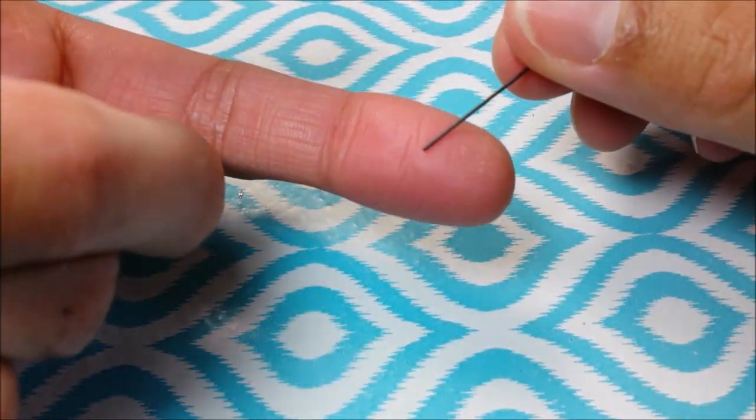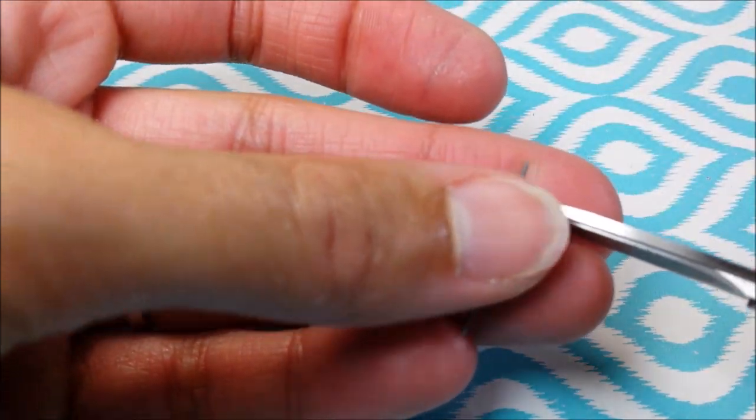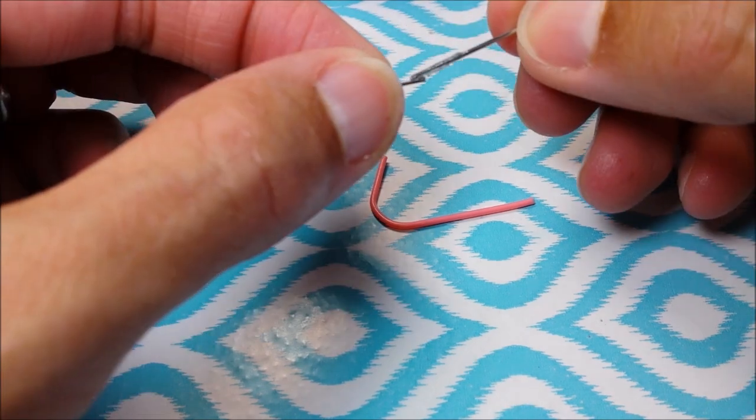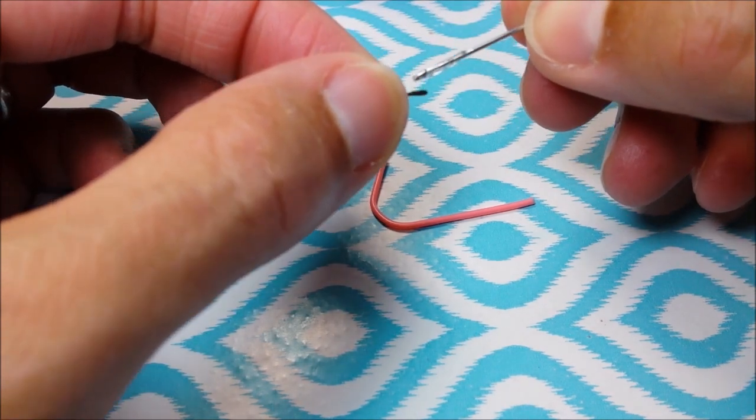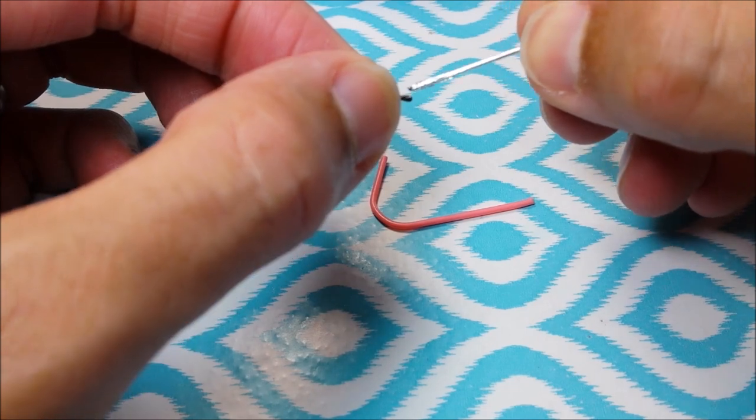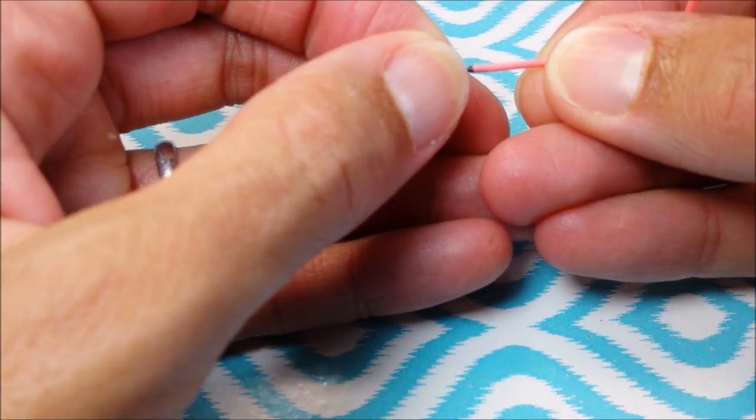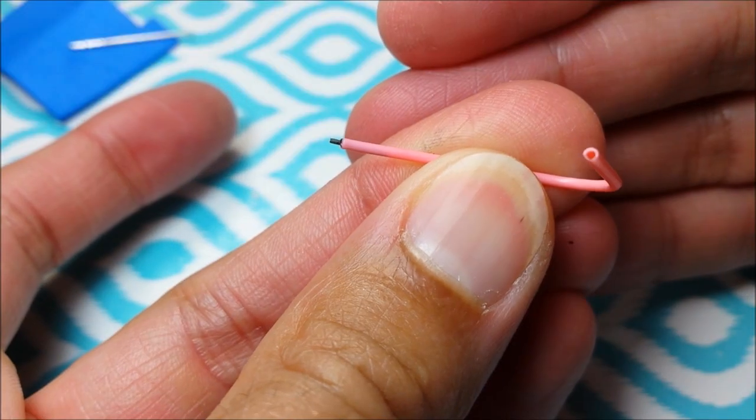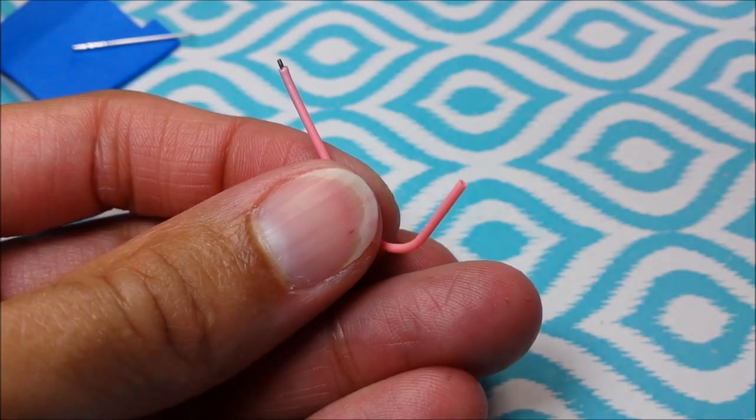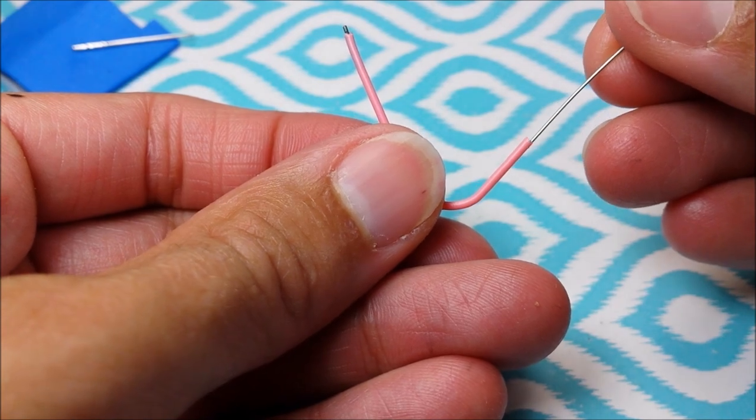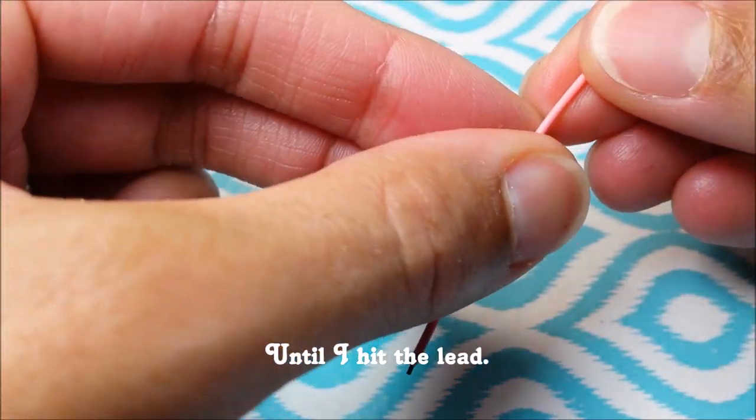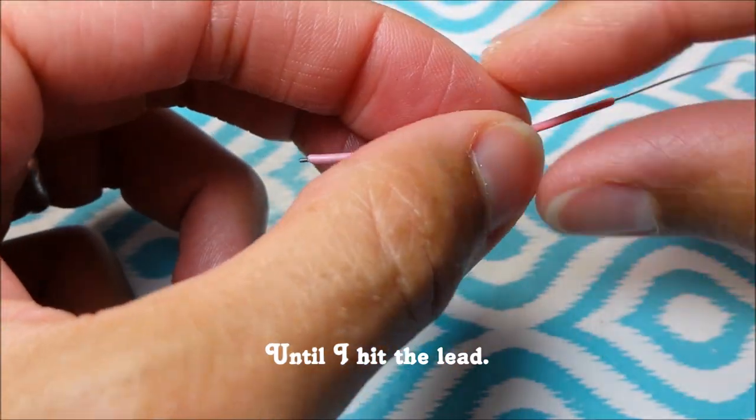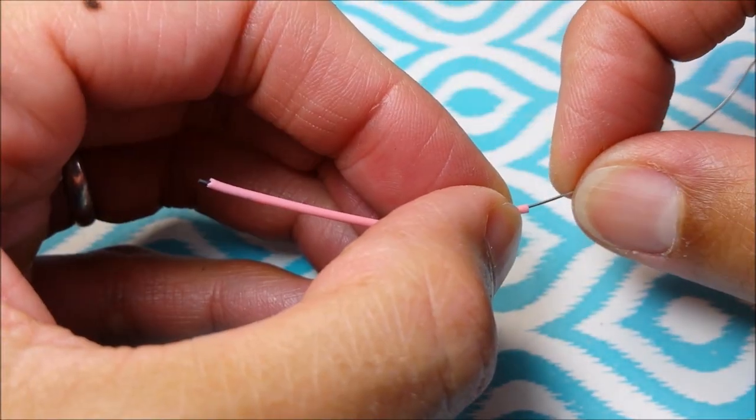Pull out a bit of lead from a mechanical pencil, snip off a section, and glue it inside using a bit of super glue. Then insert the wire and pull it out just a little bit.